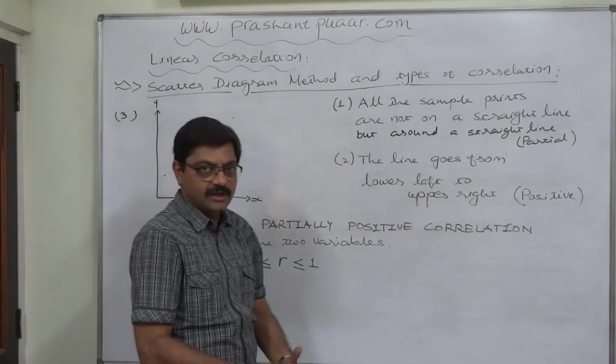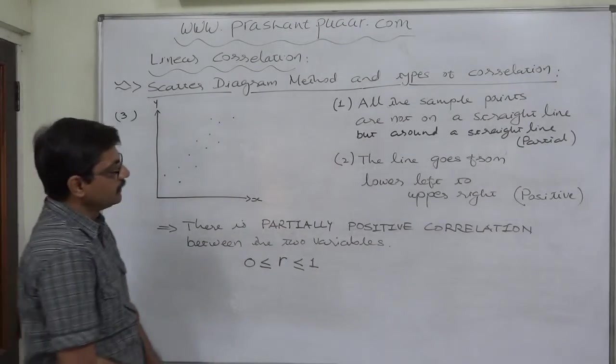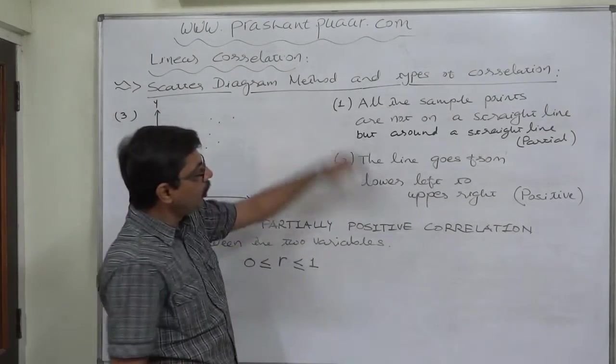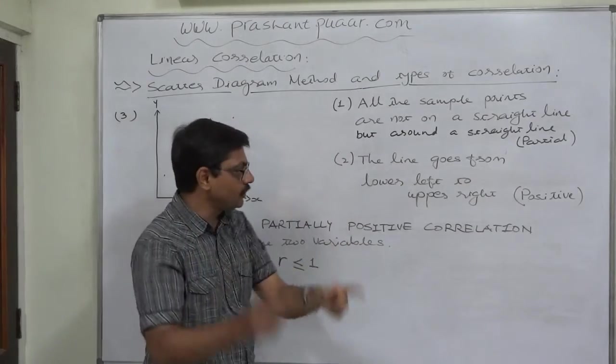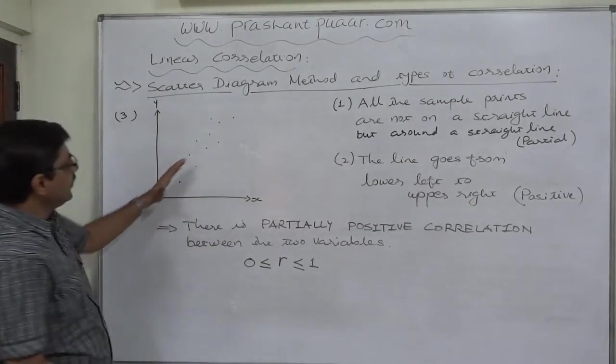After plotting the sample points, what does the diagram suggest? Our first observation is that all the sample points are not on a straight line, but around a straight line.